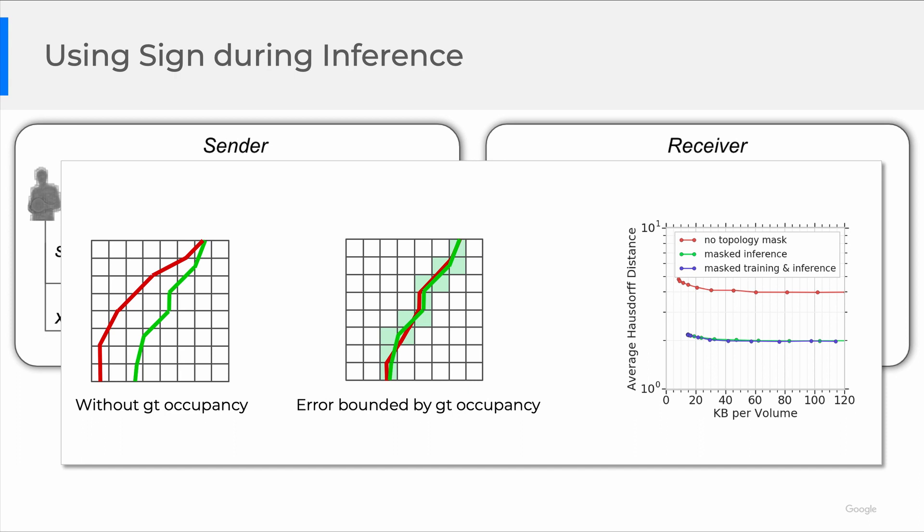This is a 2D toy example showing the ground truth surface in green and the reconstructed surface in red. On the left, without ground truth occupancy, one can only hope that the reconstructed surface is close to the ground truth, but there is no guarantee. In the middle figure, with the ground truth occupancy provided by the losslessly compressed signs, the reconstructed surface is guaranteed to be inside the same cell. Therefore, the maximum reconstruction error is bounded by the size of a voxel, as you can see quantitatively on the right.